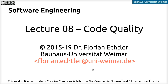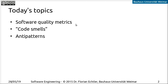Welcome to the next topic for this lecture. I would like to talk about code quality, which splits into three subtopics: metrics for code quality — how do we measure the quality of software — code smells, which are issues in the code that are not errors themselves but may cause future errors, and anti-patterns, which are common solutions for common problems that will cause other issues down the road and are not the ideal solution.